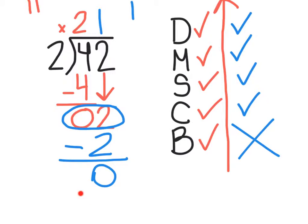If there happens to be a remainder down here, we would bring that back up here. But in this case, we don't have a remainder. So the answer to our problem, or the quotient, is 21.